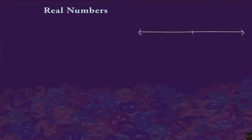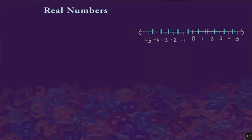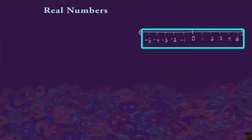In the middle of the number line we have the number 0, and on the right hand side and on the left hand side we have positive and negative numbers respectively. They are evenly spaced. These negative numbers, 0, and the positive numbers on the number line which are present with no fraction are called integers.